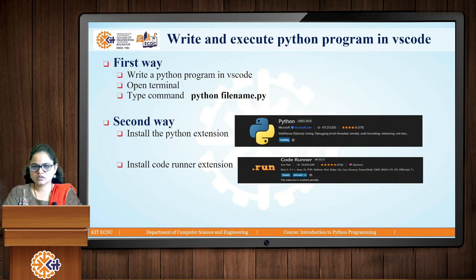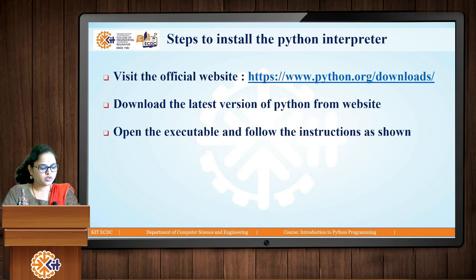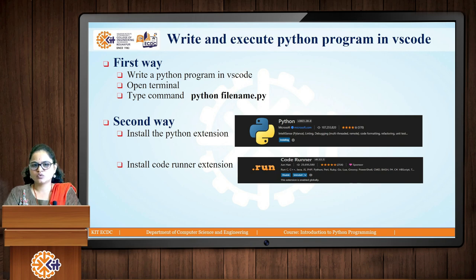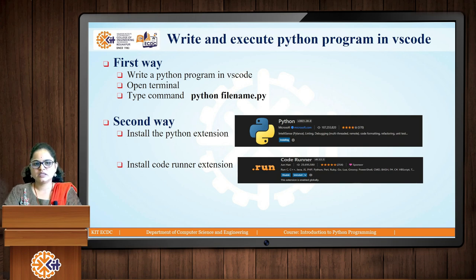For writing Python code, you can use any editor once the interpreter is installed. I prefer VS Code. To run a Python program in VS Code: write your code, save the file with a .py extension, then open the terminal in VS Code and type the command 'python filename.py' to execute it.